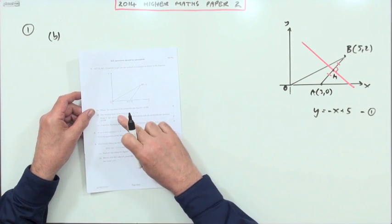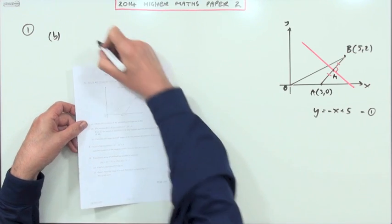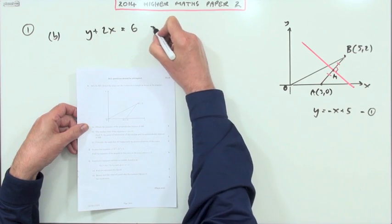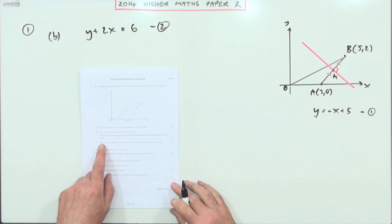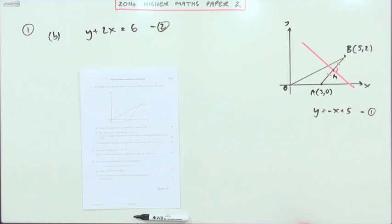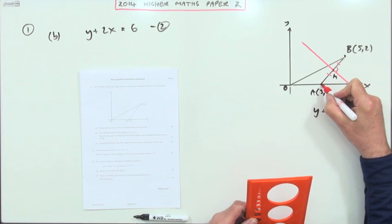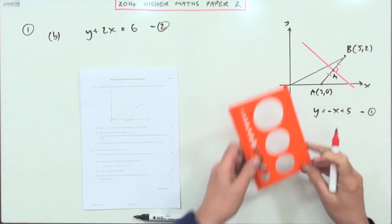Now for part B, it tells you the equation of the median from A is y + 2x = 6. I'll call that 2 because I know what's coming next. Find T, the point of intersection of that median and that original line. So where's this median? If you had been working it out, it would have been from A to the midpoint of the opposite side.